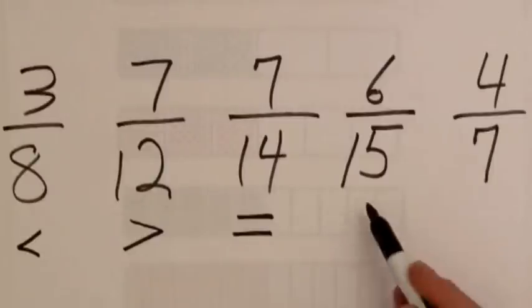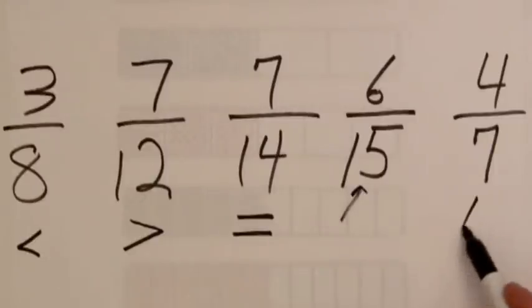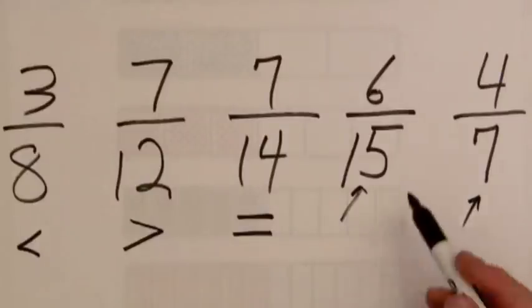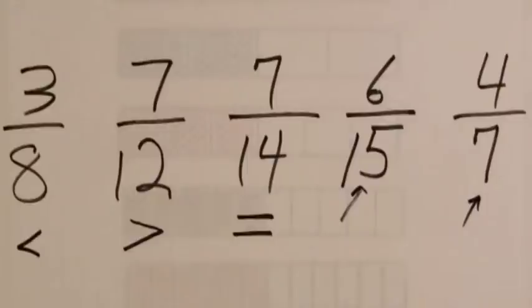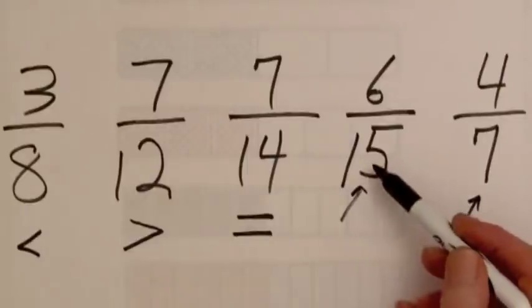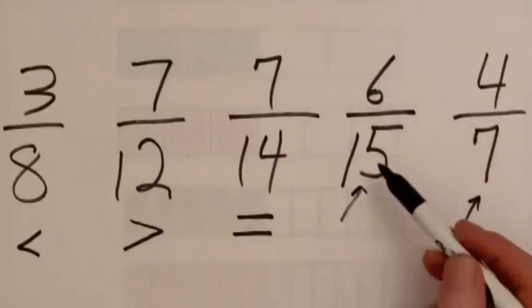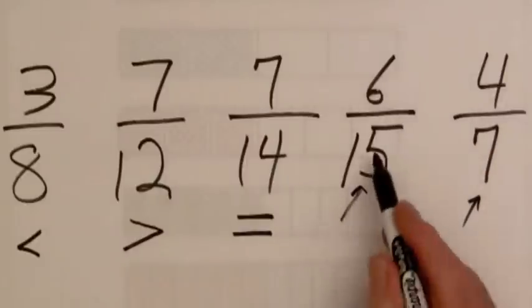Now when the denominators are odd numbers the bar for the fraction is not going to be half shaded. We can still determine if the fraction is greater than half or less than half. Half of fifteen is seven and a half. Six is less than seven and a half so this fraction is going to be less than one half.